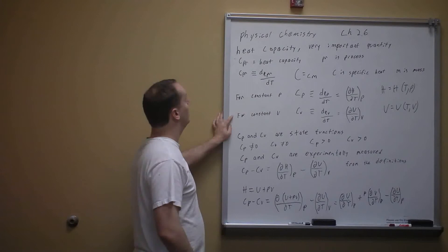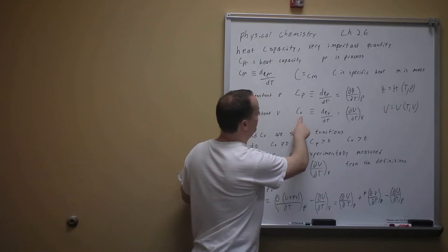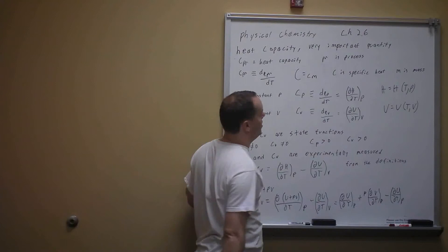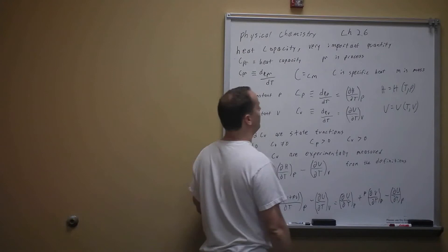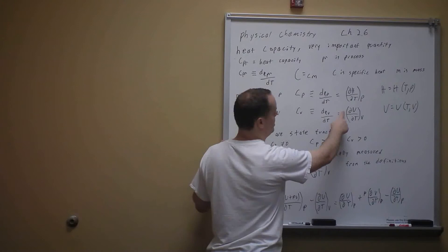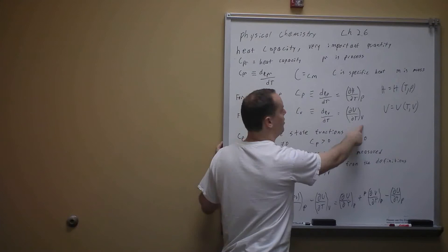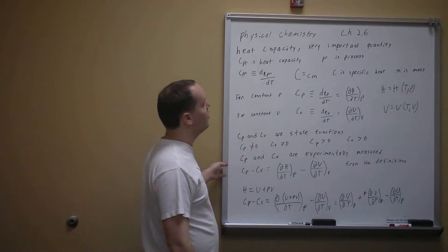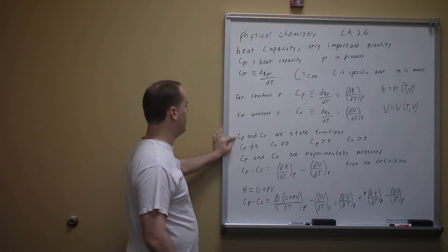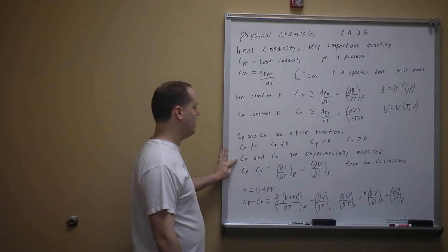For a constant volume process, we have Cv, defined as the change in heat at constant volume as it changes with temperature. We showed that at constant volume, dQ equals dU. So we have the change in internal energy with respect to temperature at constant volume. This tells us that U, internal energy, is a function of temperature and volume.